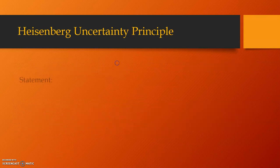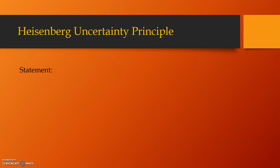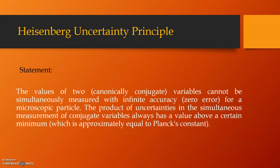So, let us just talk about the statement of Heisenberg uncertainty principle which says the values of two canonically conjugate variables cannot be simultaneously measured with infinite accuracy for a microscopic particle. The product of uncertainties in the simultaneous measurement of conjugate variables always has a value above a certain minimum which is approximately equal to the Planck's constant.